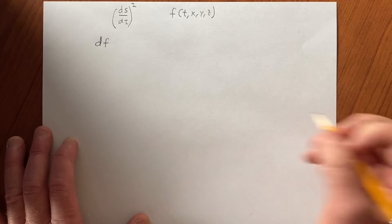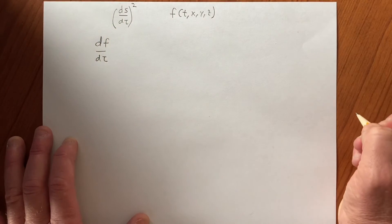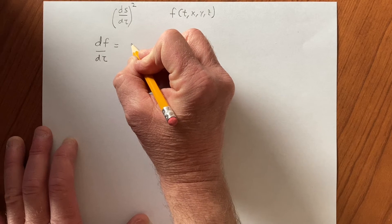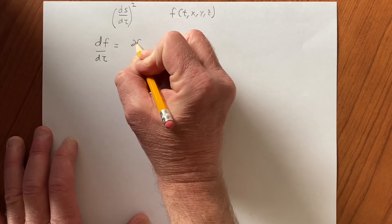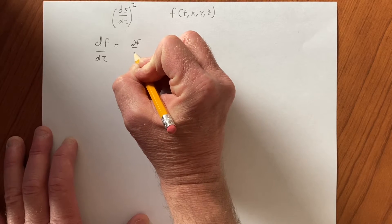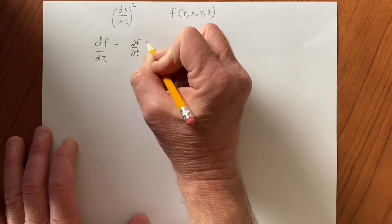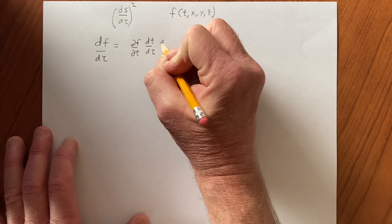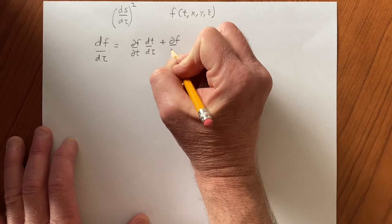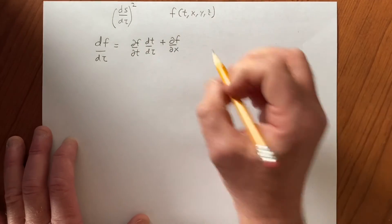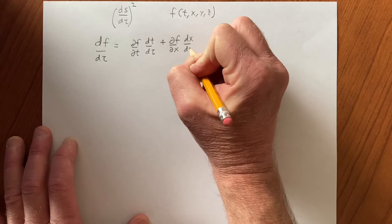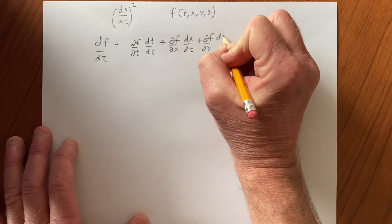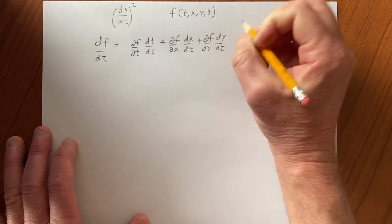So df with respect to τ—this is just the chain rule—the rate at which f varies with respect to t times dt/dτ plus its rate of change with respect to x, dx/dτ, dy/dτ.